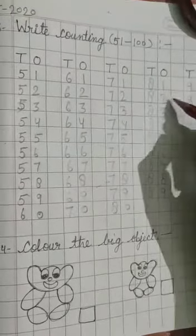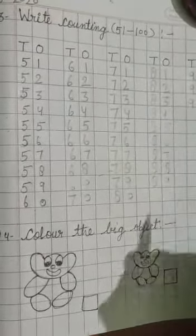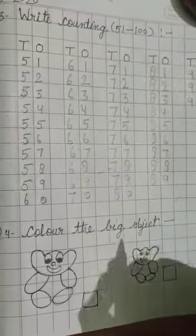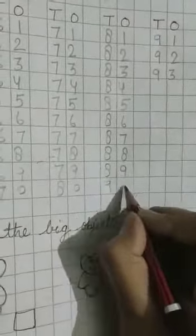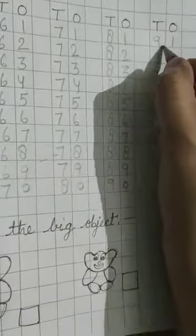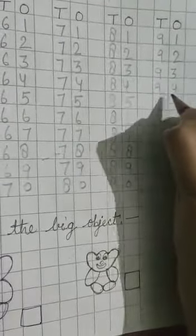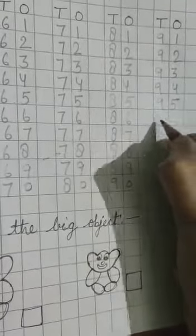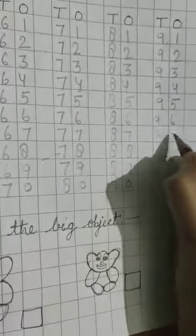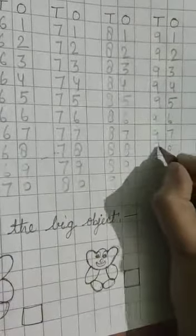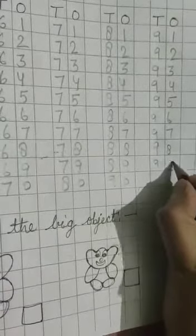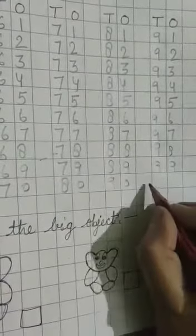Then 82, 83, 84, 85, 86, 87, 88, 89. Then what comes after 89? 90. Then 91, 92, 93, 94, 95, 96, 97, 98, 99, then 100.